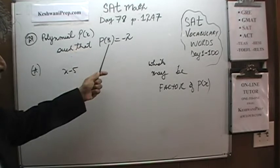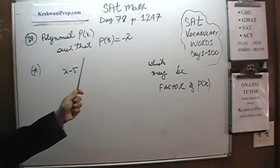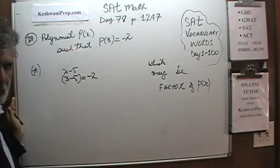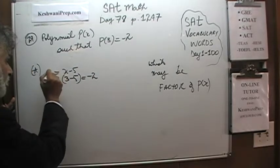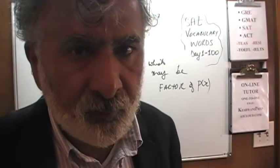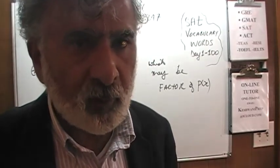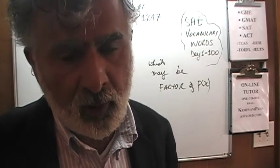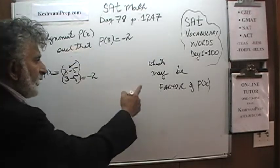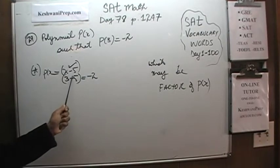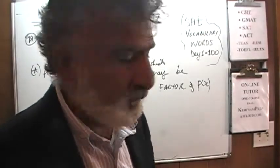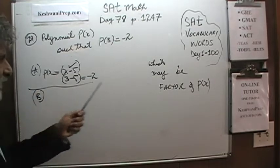The only condition we have to fulfill is that when x is equal to 3, the value of the function has to be negative 2. For all we know, p(x) could be exactly x minus 5. If that is the entire function, then x minus 5 would definitely be a factor of p(x) — p(x) divided by x minus 5 would just be 1. So A may be a factor of p(x).